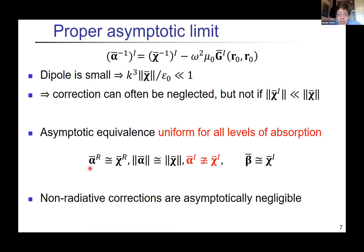This brings us to proper understanding of asymptotic equivalence. Two quantities are asymptotically equivalent if in the limit they have the same small size limit, but this limit should be uniform for all levels of absorption. In this sense the real parts are always asymptotically equivalent, and β is always asymptotically equivalent to the imaginary part of χ. But α and χ imaginary parts are not asymptotically equivalent, justifying that radiative correction is important for this asymptotic limit to hold. Non-radiative corrections are actually asymptotically negligible.